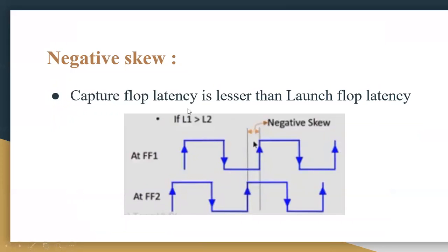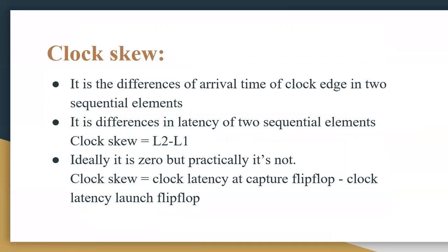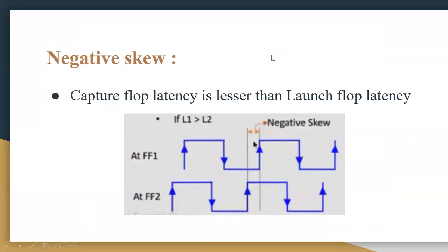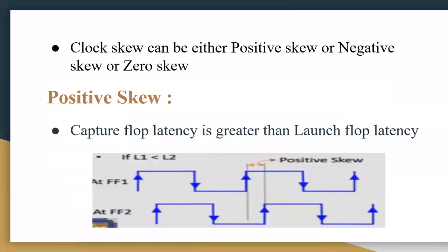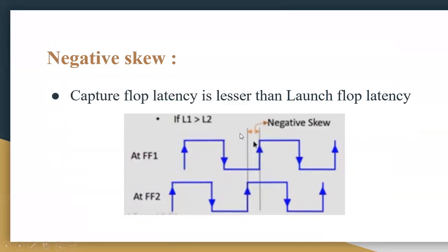Negative skew is nothing but when the capture flip-flop latency is lesser than the launch flip-flop latency. That is, when L1 is greater than L2, negative skew occurs. Here you can see FF1's clock latency is greater than FF2's latency L2 — that is nothing but the negative skew. In summary: in positive skew L2 is greater, and in negative skew L1 is greater.